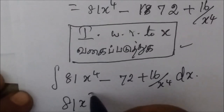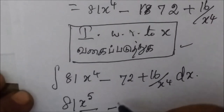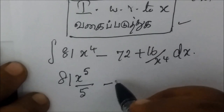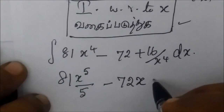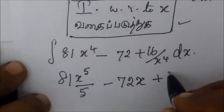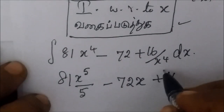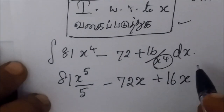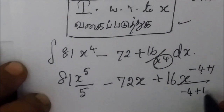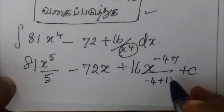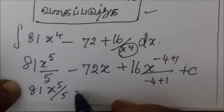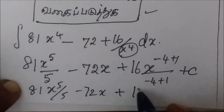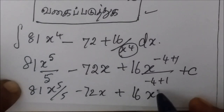Applying the power rule: 81x to the power n plus 1 by n plus 1. The constant of integration is x. Then for 16 x to the power minus 4, we get x to the power minus 4 plus 1 by minus 4 plus 1, plus C. So the answer is 81x to the power 5 by 5 minus 72x plus 16x to the power minus 3.